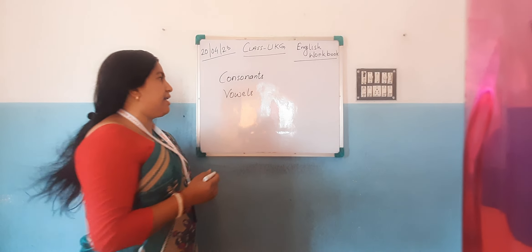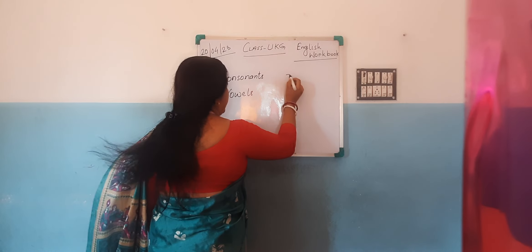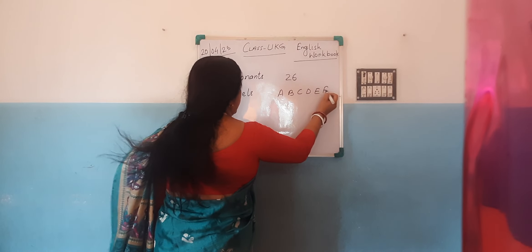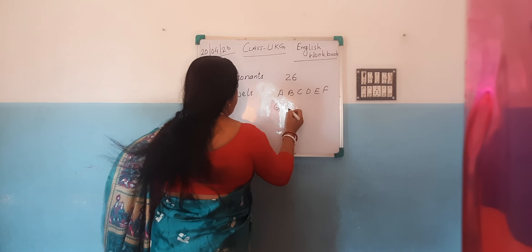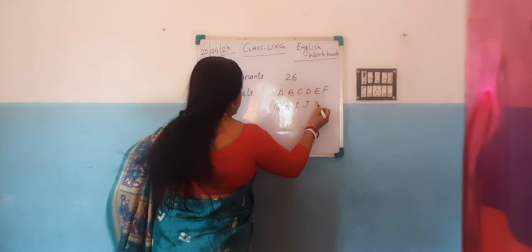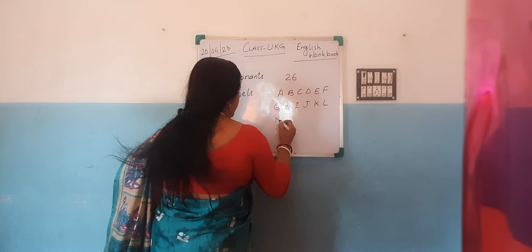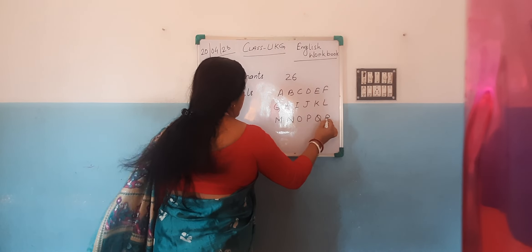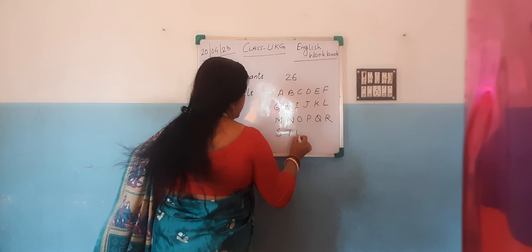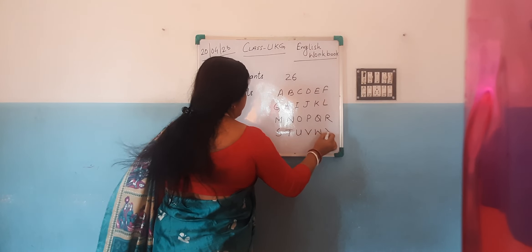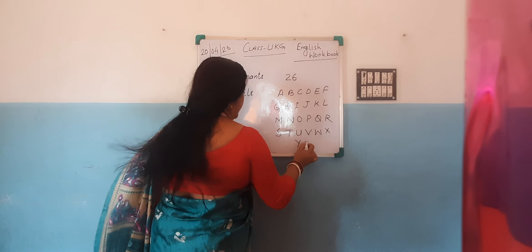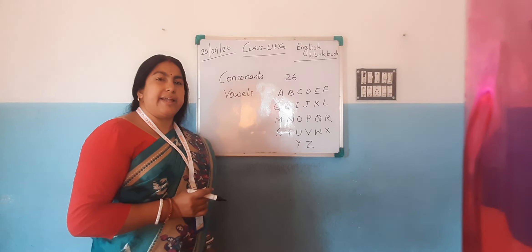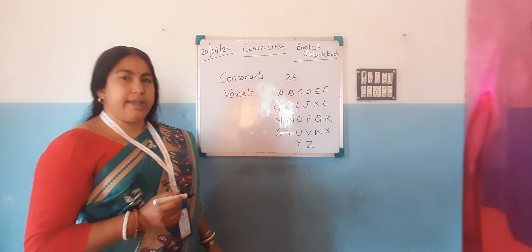In the English alphabet, all of you know there are 26 letters: A, B, C, D, E, F, G, H, I, J, K, L, M, N, O, P, Q, R, S, T, U, V, W, X, Y, Z. So there are 26 letters or alphabets in English.